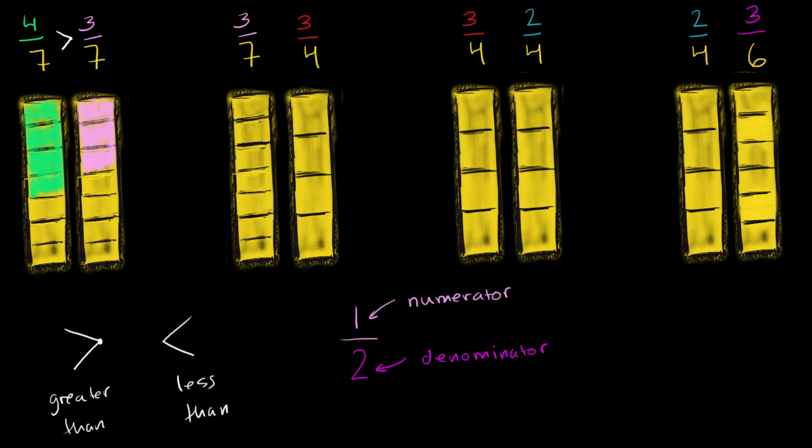Well, let's color them in. So let's think about 3 sevenths first. And we actually already drew it here, but I could do it really fast right over here. So that is 3 sevenths. I've colored in three of the seven equal groups. And what would 3 fourths be? Well, that's 1 fourth, 2 fourths, and 3 fourths.